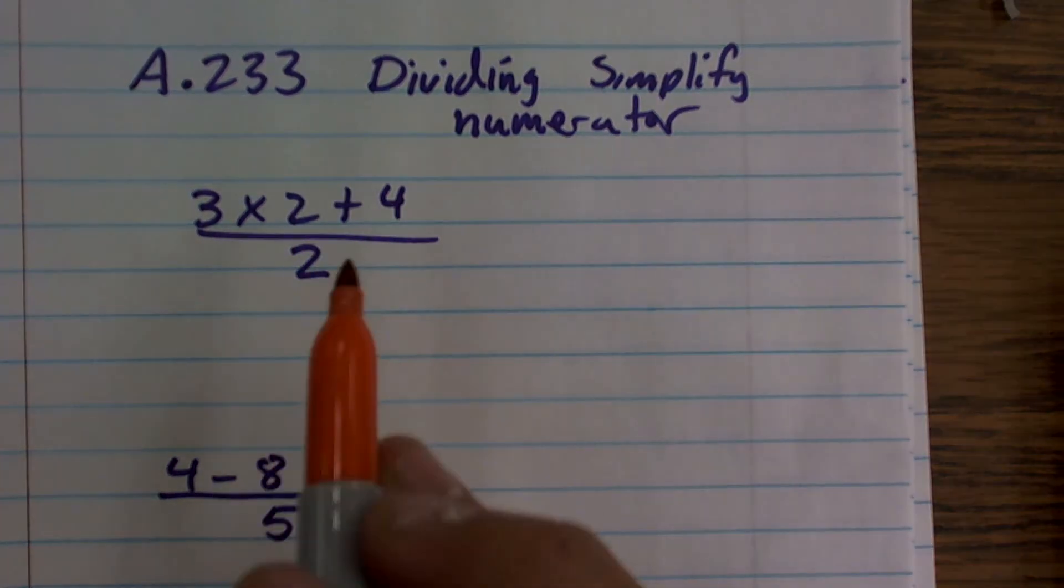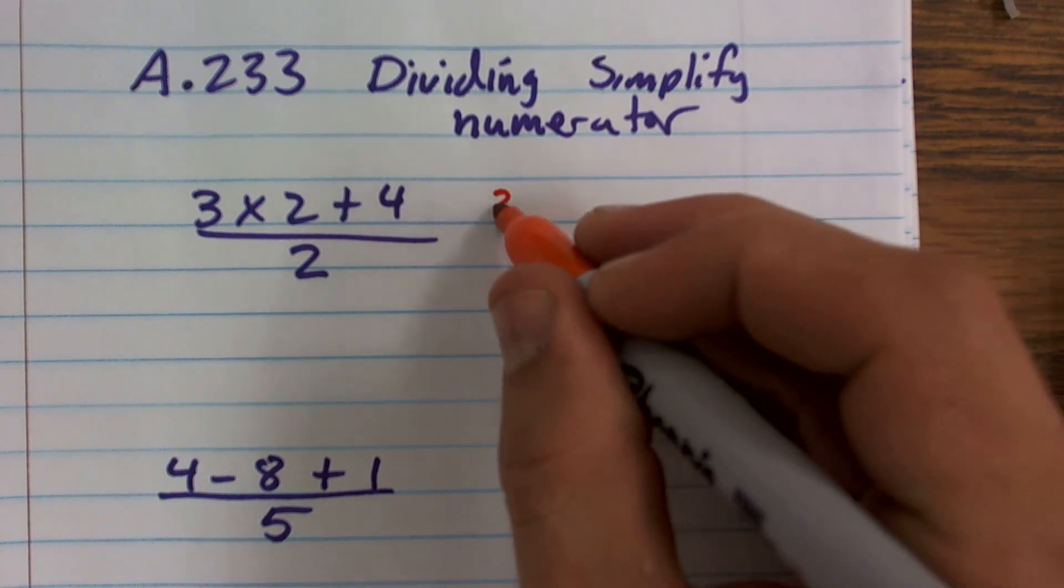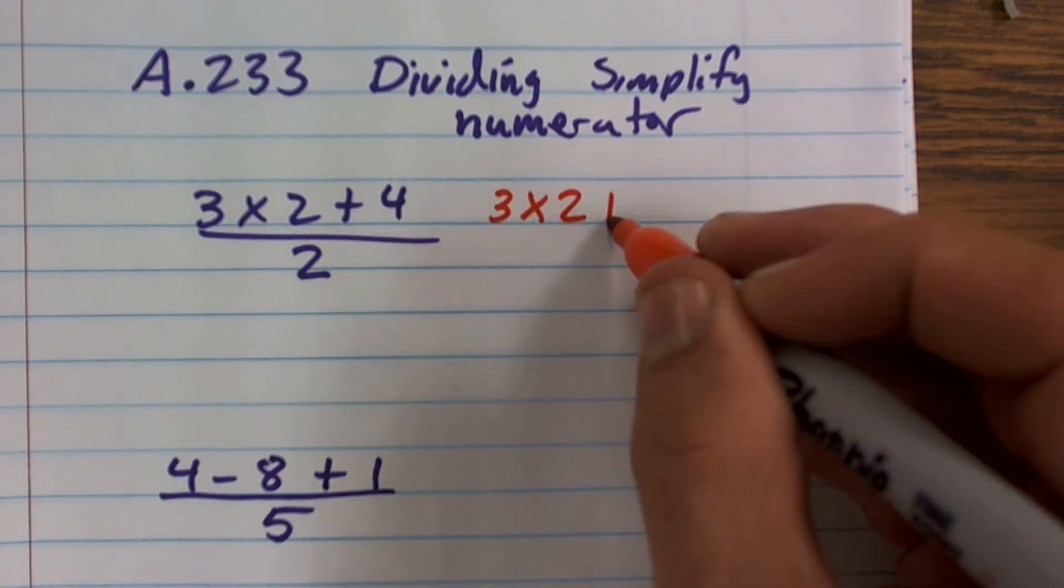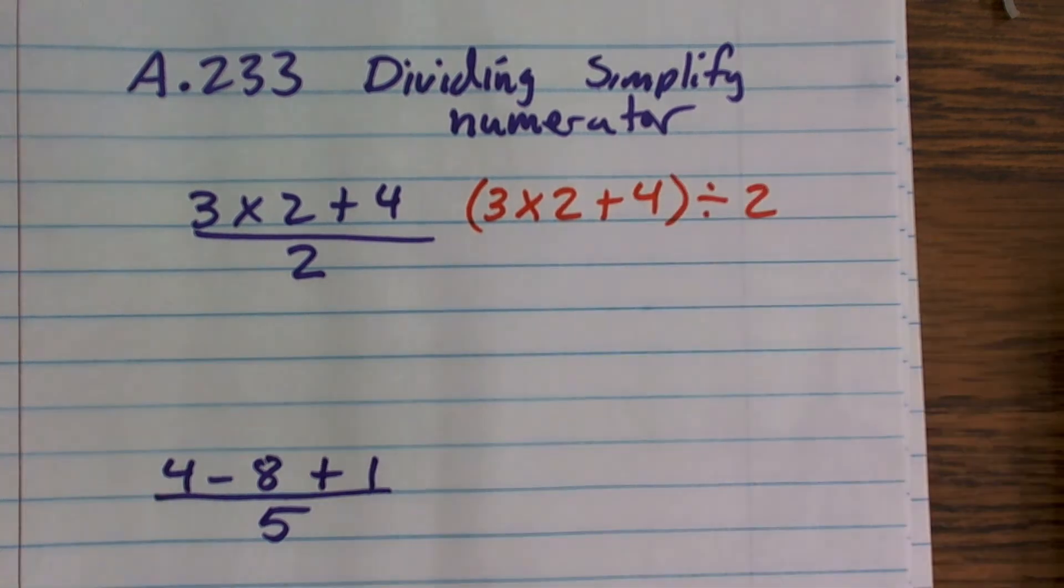So notice 2 is dividing everything, right? So what I can do is I can rewrite this as 3 times 2 plus 4 in parentheses, divided by 2.